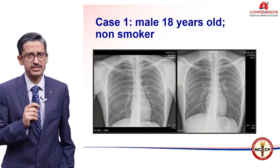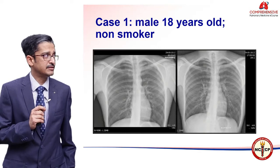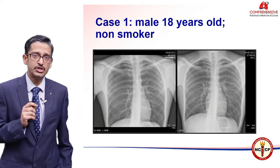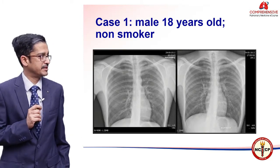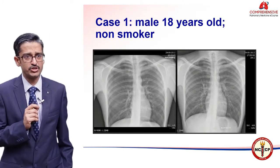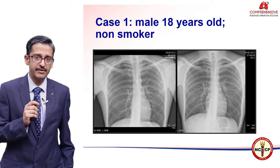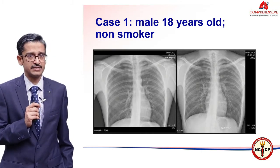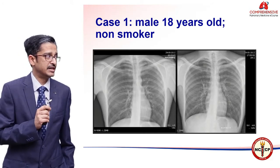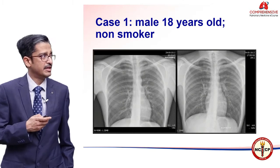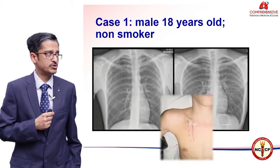I start off by showing you this x-ray. We look at a man, 18 years old, who is a non-smoker, who comes to you with sudden onset chest pain. If you look carefully — and I don't know how well this projects on your laptop or computer — there is a small pneumothorax at the very lung apex. This is an inspiratory and expiratory film, and you can see it in both films; maybe in the second one it shows up better.